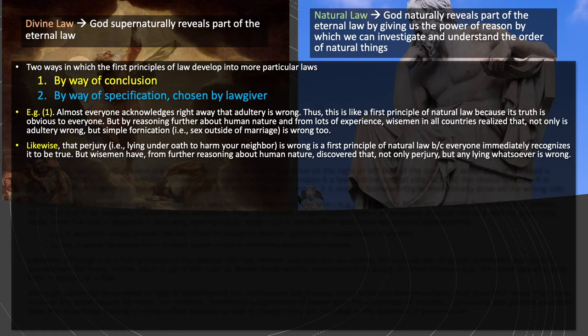Here's another example. Everyone will acknowledge that perjury — lying under oath to harm your neighbor — is wrong. This is a first principle of the natural law because it is immediately obvious and self-evident to everyone. But wise men, from much experience and reasoning about human nature and from this first principle of natural law, discovered a further conclusion: not only is perjury wrong, but every form of lying is wrong. Again, this conclusion is not obvious to everyone — it is something concluded through thorough investigation of human nature, experience, and the first principles of natural law.